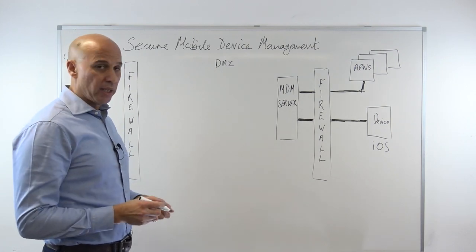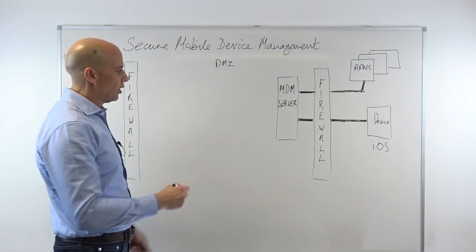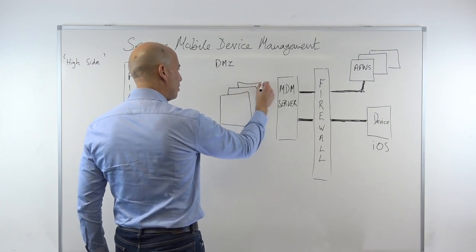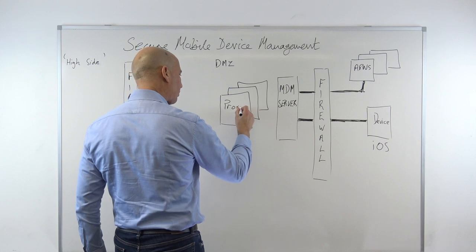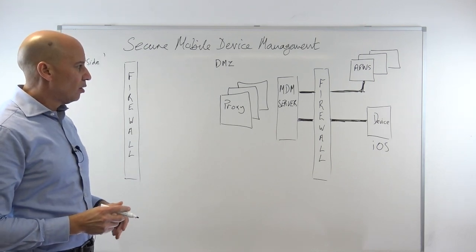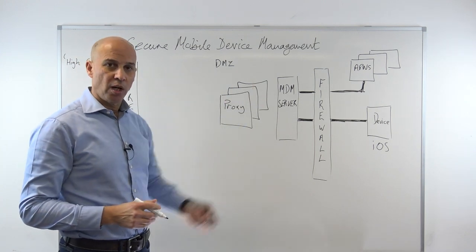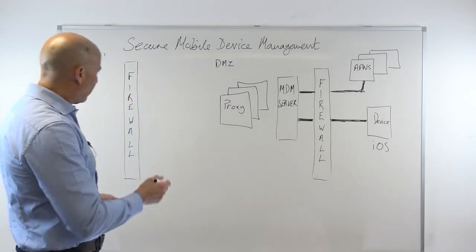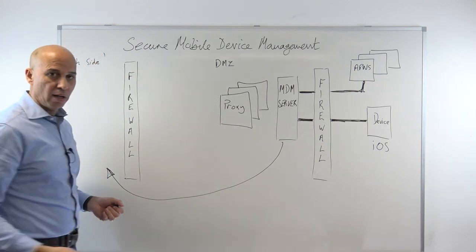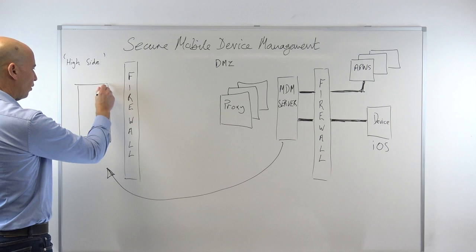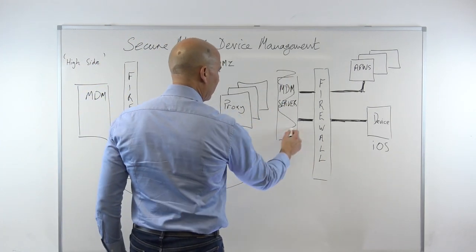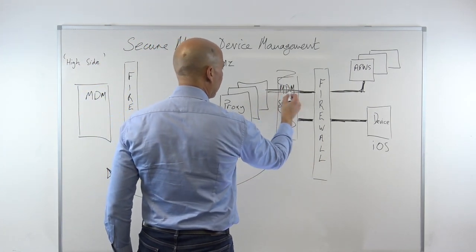The work that we did with government was to prove and then implement an architecture based on having a series of proxies that exist within the DMZ. These implement all of the functionality required of the various parts of the Apple ecosystem, so for all intents and purposes they appear to the outside world to be the MDM server. What this allows us to do is actually move our MDM server — which holds all of the high-value information — into the high side.